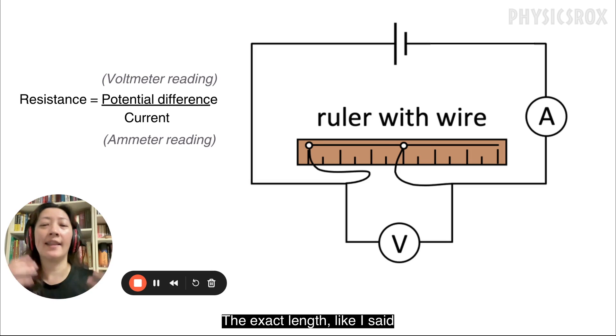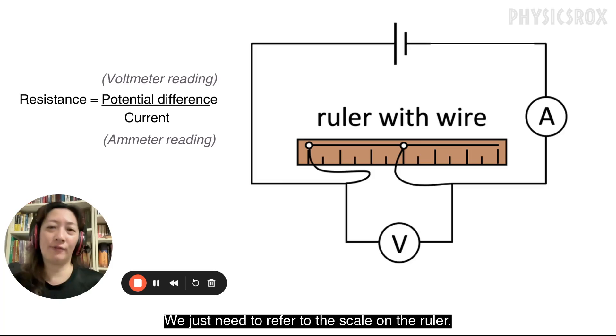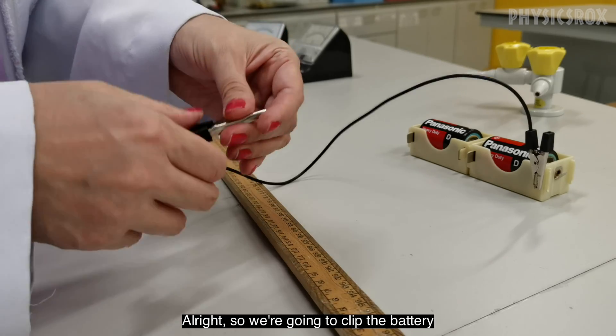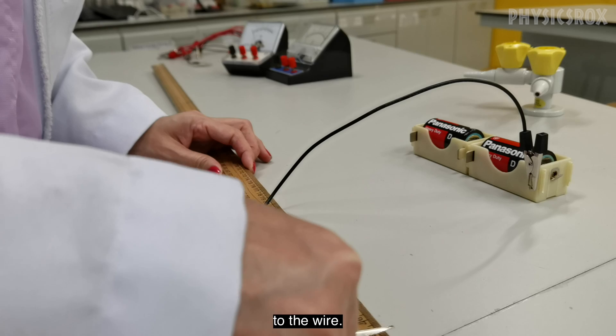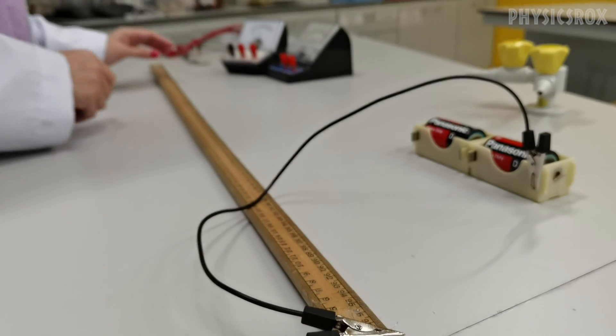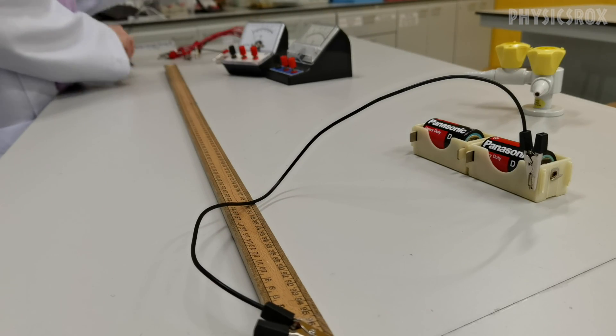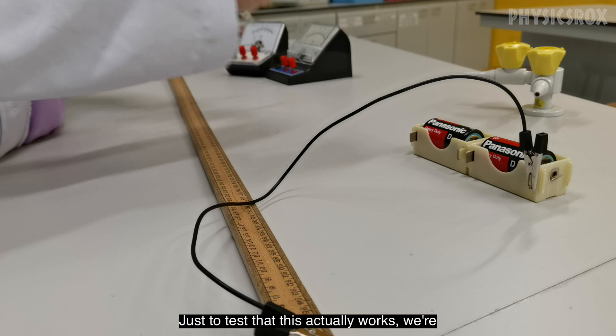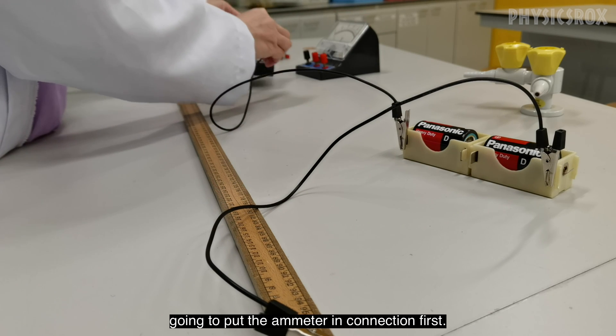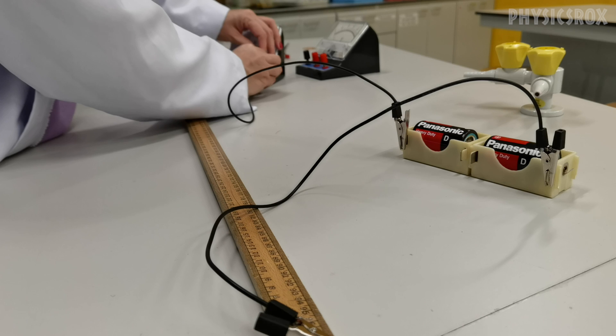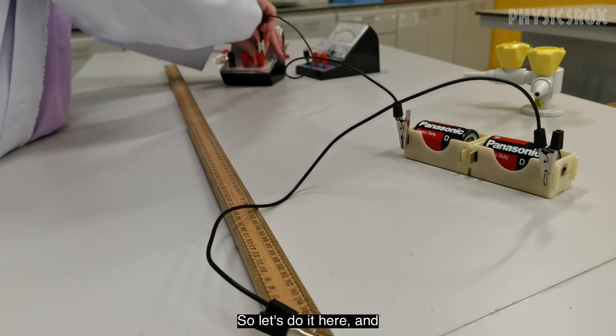The exact length, like I said, we just need to refer to the scale on the ruler. Alright, so we're going to clip the battery to the wire. Just to test that this actually works, we're going to put the ammeter in connection first. So let's do it here.